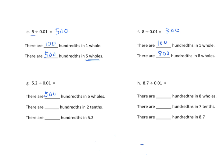And how many hundredths are in two-tenths? Two-tenths equals how many hundredths? It would be twenty hundredths if we multiply both the numerator and the denominator by ten. So we have twenty hundredths in two-tenths. Therefore, in five and two-tenths, we have five hundred twenty hundredths. Similarly, eight wholes gives eight-hundred hundredths, and seven-tenths times ten gives seventy hundredths, so eight and seven-tenths equals eight hundred seventy hundredths.